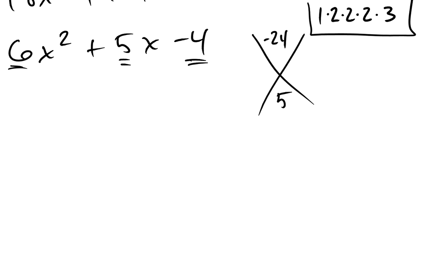I can tell by looking at it that one of these numbers will be negative and one must be positive, because they multiply to give negative 24. And also, the positive one has to be larger. You can play with a lot of combinations — you can look at 6 and 4, or 12 and 2, or 1 and 24.